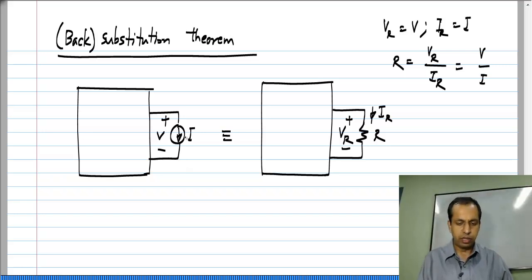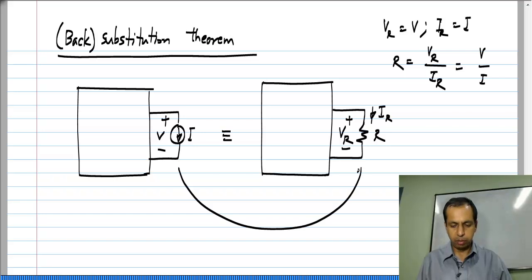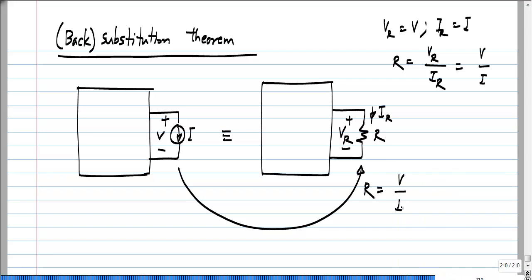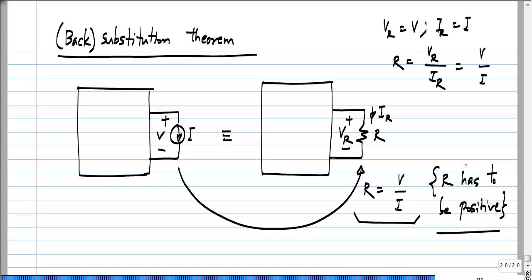We also know that the resistance R is V_R divided by I_R, which has to be equal to V by I. So if I have a current source with the voltage V across it, I can replace that with a resistor where the resistance value equals V divided by I. This is how we can find the value of the resistance. The one condition is that this resistance has to be positive. If you substitute current sources which are dissipating power with positive resistors, the substitution always works — meaning none of the voltages and currents in the circuit will be altered.